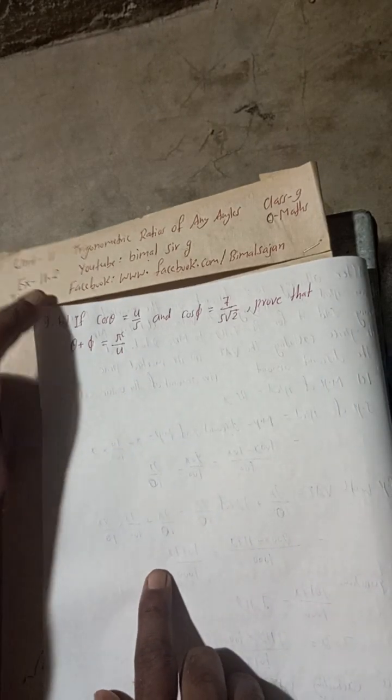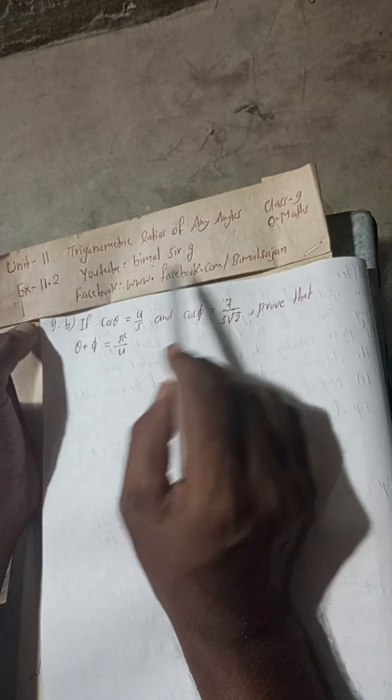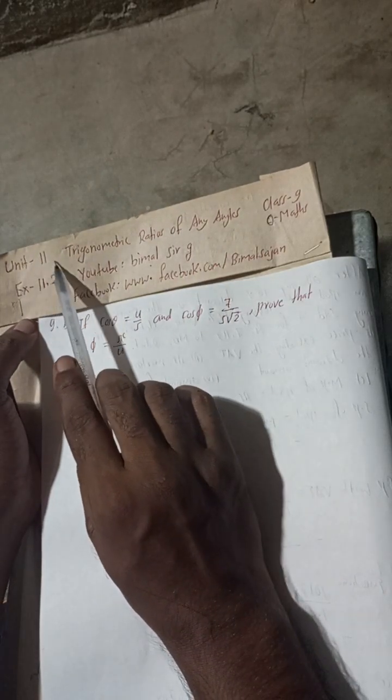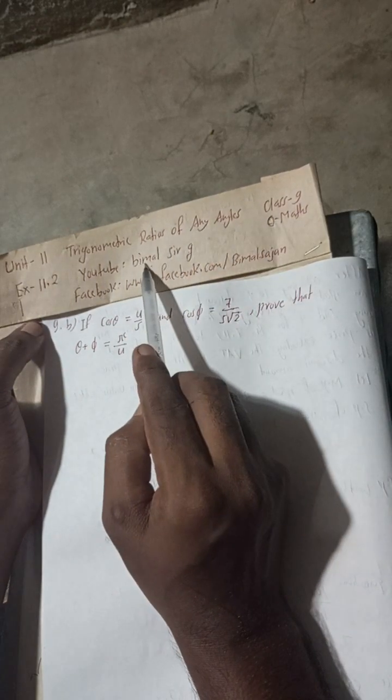Radhe Radhe Jaya Sri Krishna. Class 9 and 10 students, welcome back to Bimal Sarji's YouTube channel. This is question number 9b of exercise 11.2, unit 11 trigonometric ratios of any angles, class 9 optional maths.